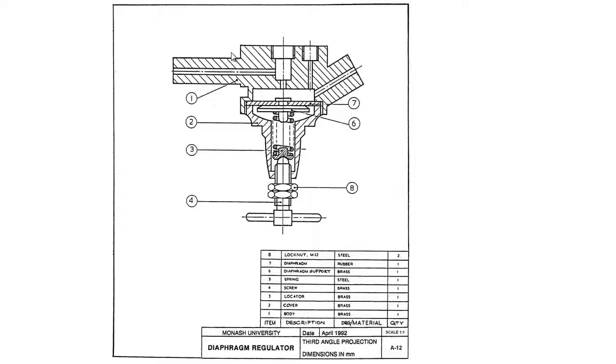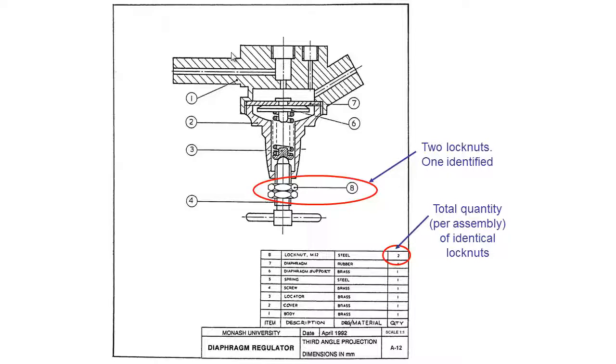We can also look at this example. If we look at this part number eight which is two lock nuts, you can see only one of them has been labeled. Only one of our two lock nuts has been identified in the drawing, but if we go down to our parts list you can see there are two of them. We've got the total quantity here in the parts list and from our drawing we can easily locate both of those lock nuts.